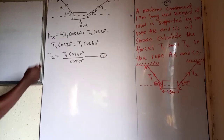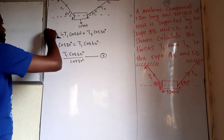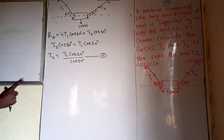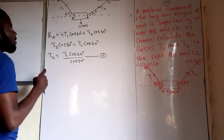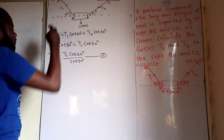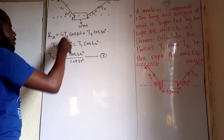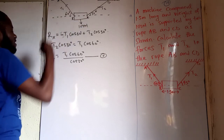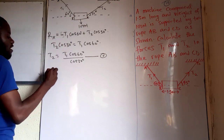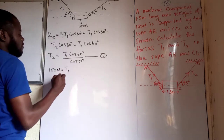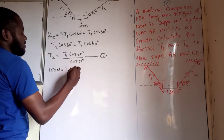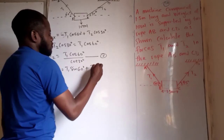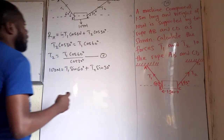The summation of forces on the vertical components must equal the weight of the body, because the weight is acting vertically. Hence we have: 100 newtons equals T1 sine 60 degrees plus T2 sine 30 degrees.